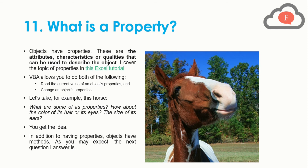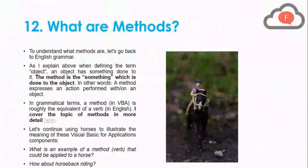In addition to having properties, objects have methods. The 12th point is: what are methods? To understand methods, let's go back to English grammar. A method is something which is done to the object — in other words, a method expresses an action performed with or on an object. In grammatical terms, a method in VBA is roughly equivalent to a verb in English.